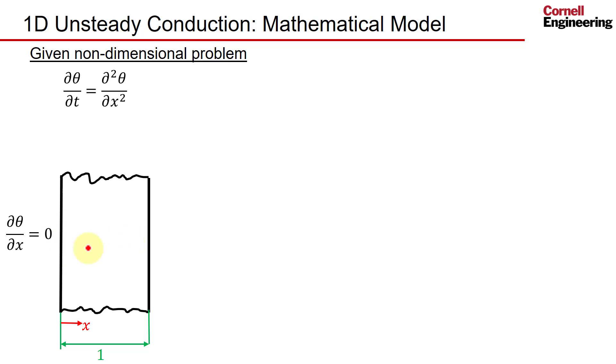We are modeling only half of the slot. At the right, you have a convection boundary condition, again couched in non-dimensional terms, where Bi is the Biot number.